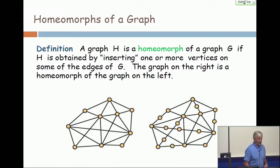One graph is a homeomorph of another one if the second one is obtained by inserting one or more vertices on some of the edges. So, look at the graph on the right, and you see, it's basically the same graph. But on some of the edges, I put in one or two or three or I put as many as I like. The graph on the right is a homeomorph of the graph on the left.